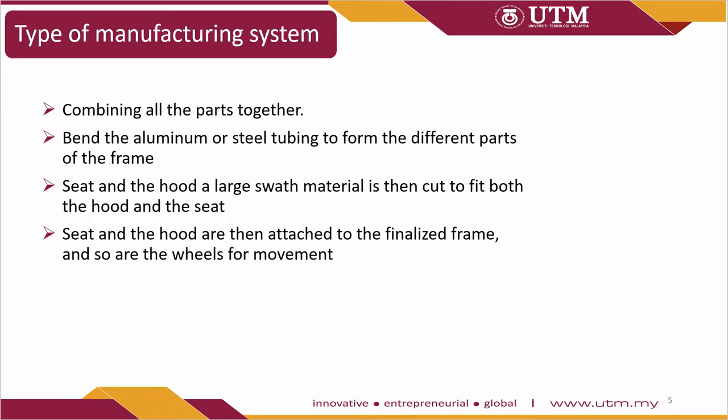Regarding the type of manufacturing system, all parts are combined together. This involves bending aluminum or steel tube beams to form the different parts of the frame. A large swatch of material is then cut to fit both the hood and the seat, which are then attached to the finalized frame along with the wheels for movement.